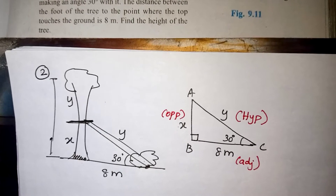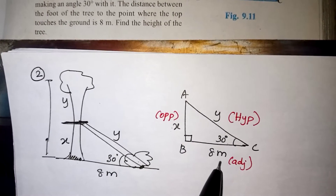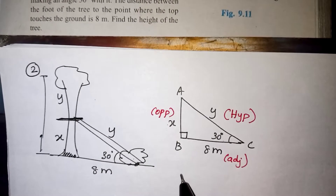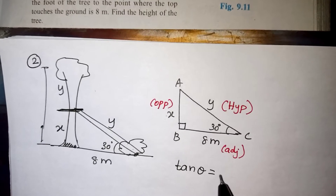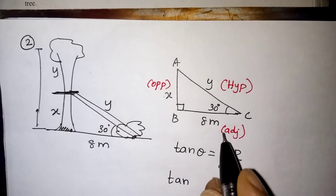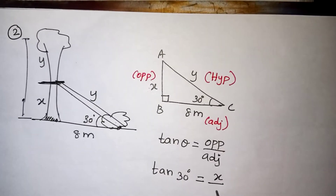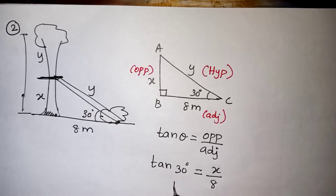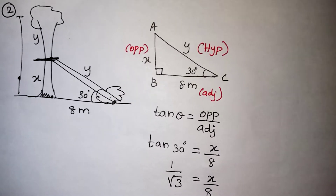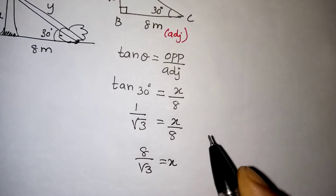First I am going to find the x value. x is the opposite side and 8 is the adjacent side. Since the question involves opposite and adjacent, we use tan theta. Tan theta equals opposite over adjacent, so tan 30 equals x over 8. Tan 30 from the table is 1 over root 3, which equals x over 8. Bringing the 8 to the other side: x equals 8 by root 3.